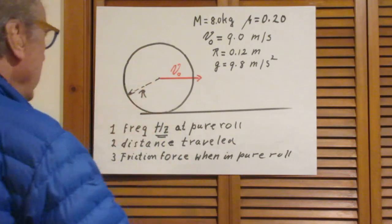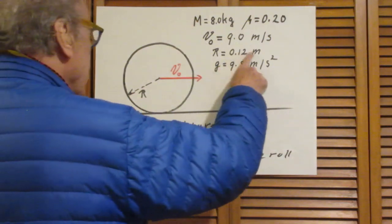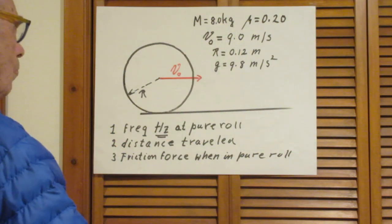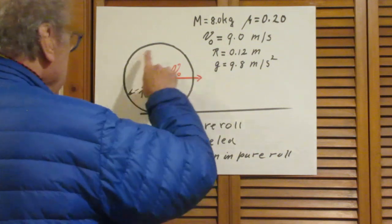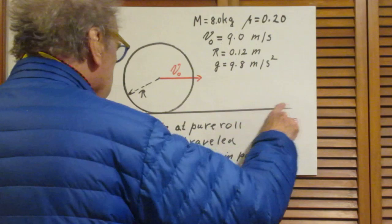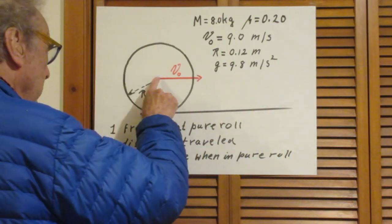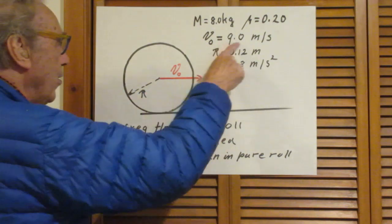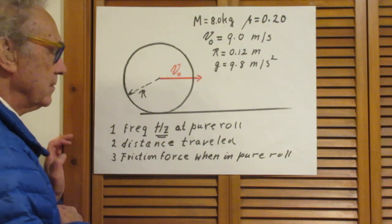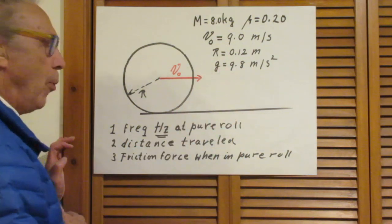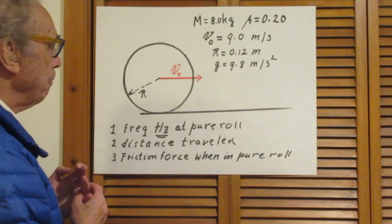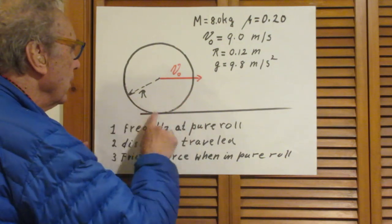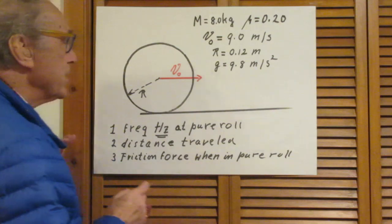It has a radius R and a mass M. The radius is 12 cm, the mass is 8 kg, and I release it on a horizontal surface. I release it with zero spin, but it has a speed V0, and V0 is 9.7 meters per second. We will take gravity as 9.8 meters per second squared. The friction coefficient between the sphere and the surface is 0.20.